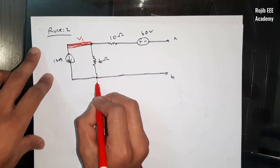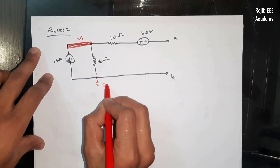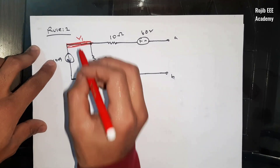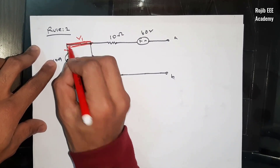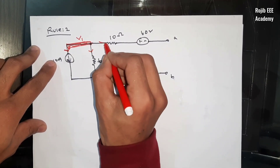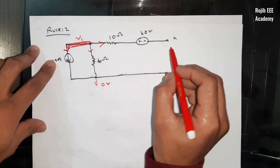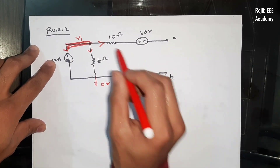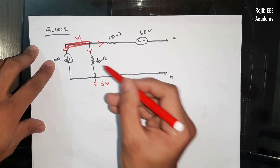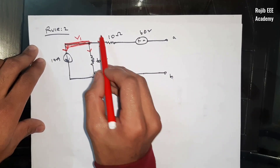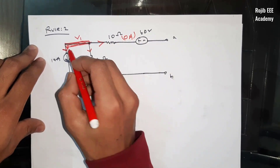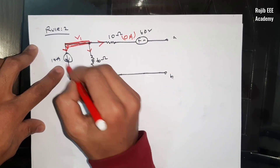The node is V1 and the reference is 0V. We are going to apply node analysis. Since the AB terminal is open, i₂ is equal to 0 Ampere — meaning 0 Ampere current flows through that branch. The theta branch current is also 0.